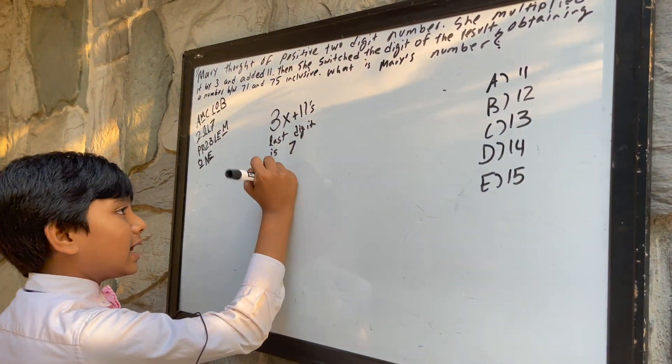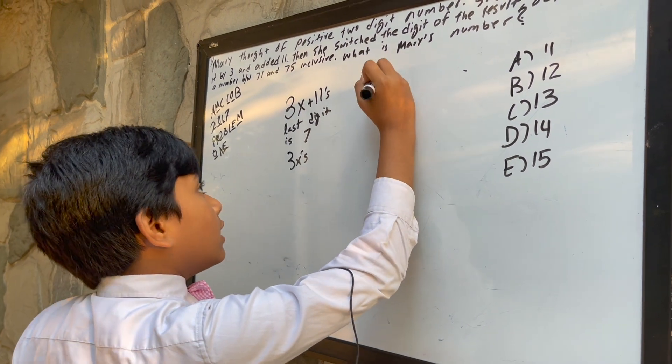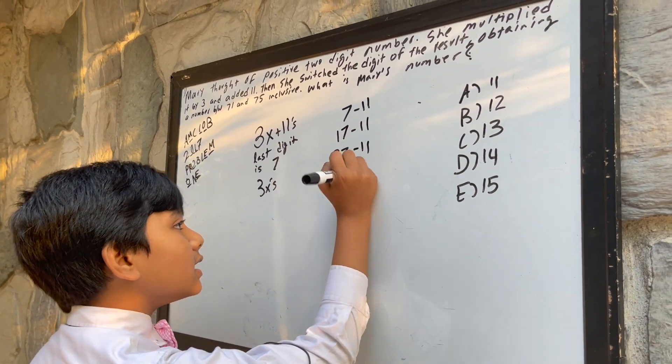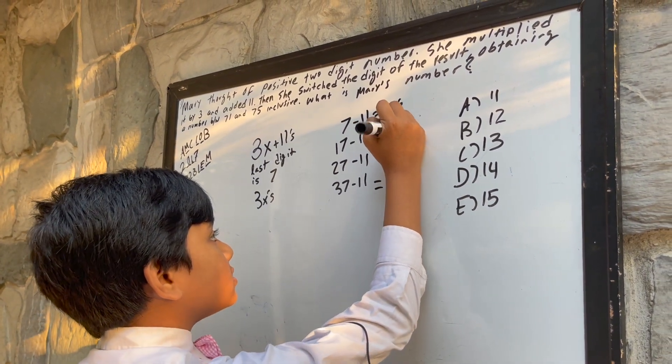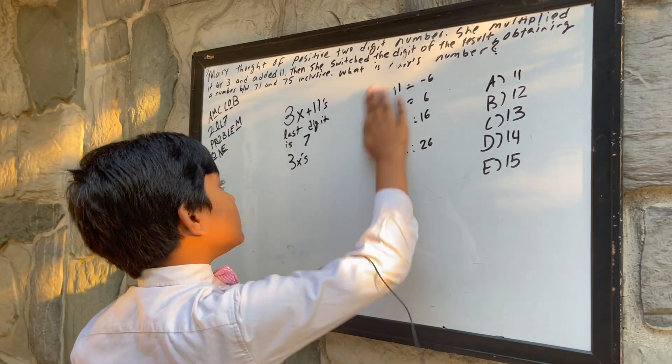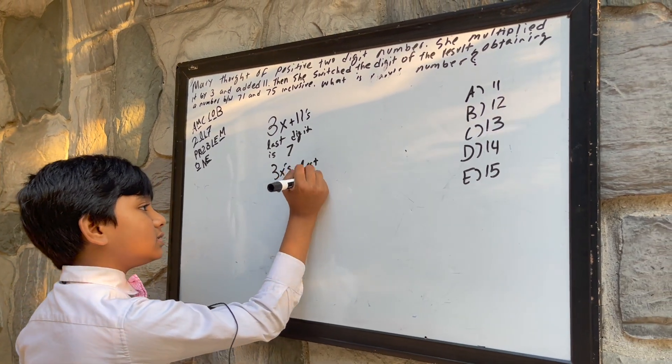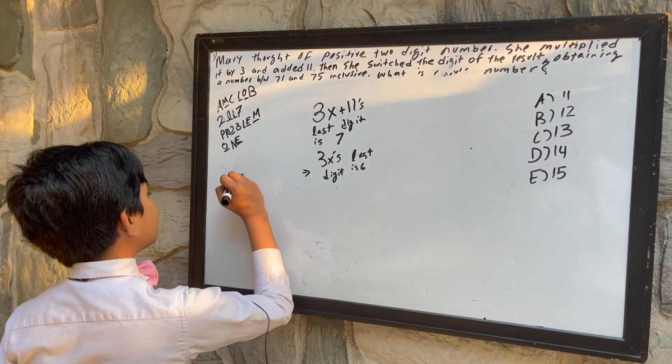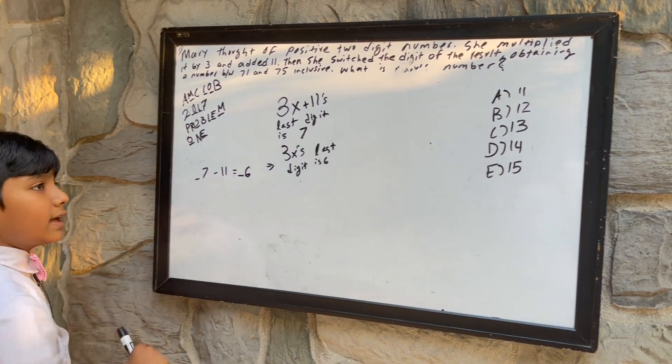So what is 3x plus 11? If you take any number that ends with 7 and then you subtract 11 from it, it will always give you a number whose last digit is 6. So that means if we subtract 11 from here, giving us 3x, then 3x's last digit is 6. Write this down: a number ending with 7 minus 11 will always equal a number ending in 6.